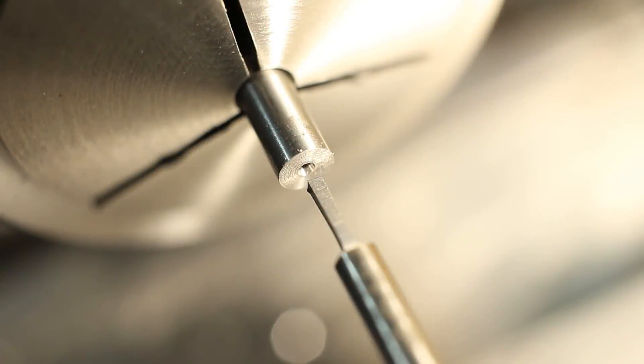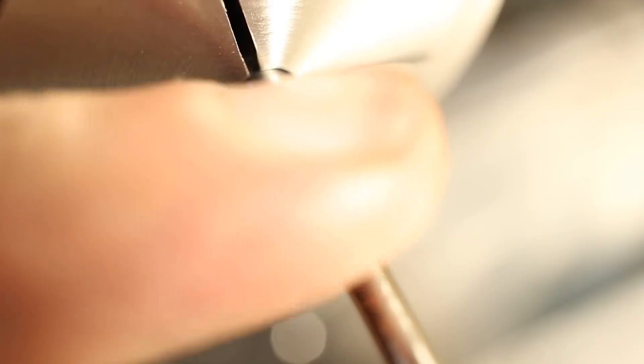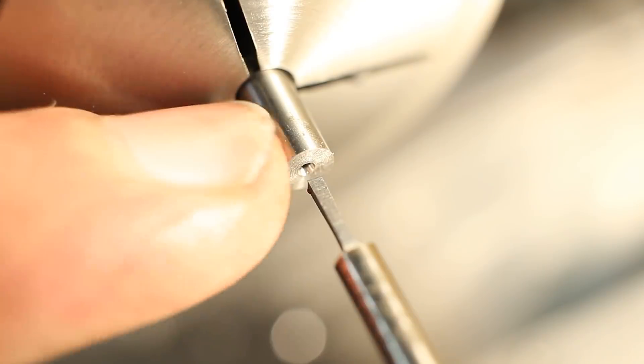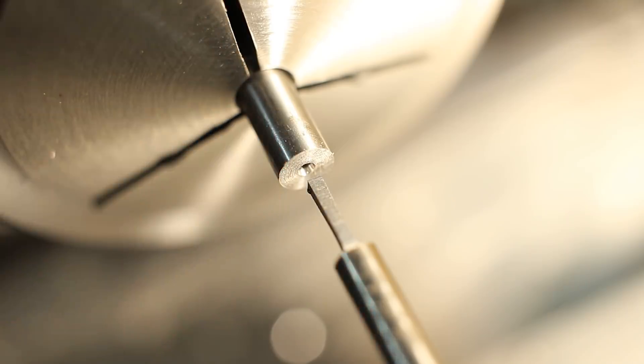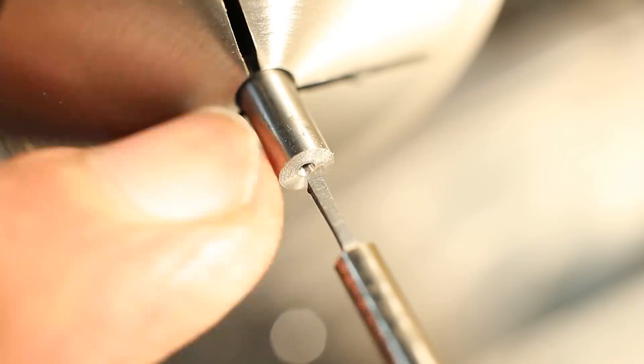I think I should show you at least one test cut with one of these tools. One millimeter square broach, piece of AP20 Sandvik tool steel, pre-drilled one millimeter.